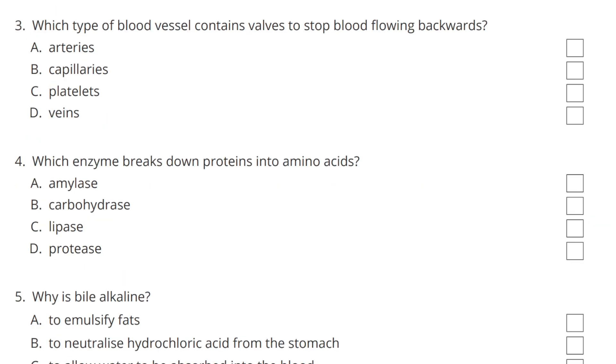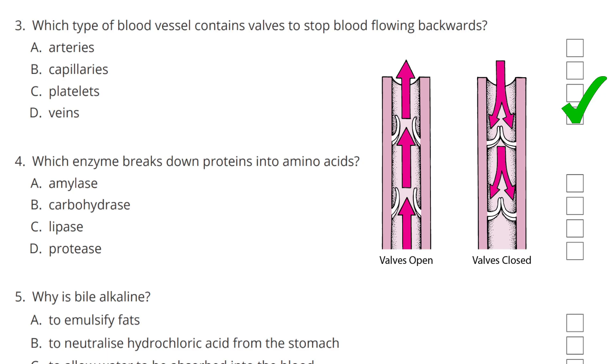Question 3. Which type of blood vessel contains valves to stop blood flowing backwards? The answer is veins — I remember this because veins have a V and so do valves.